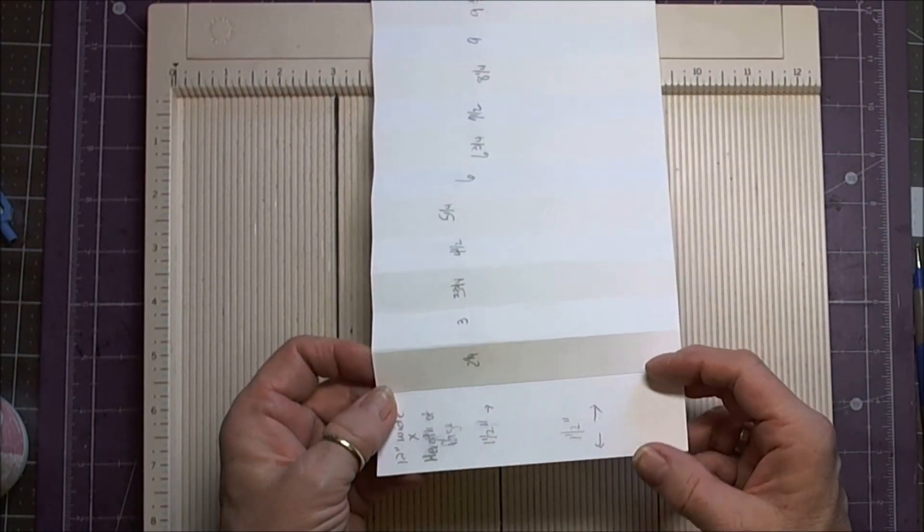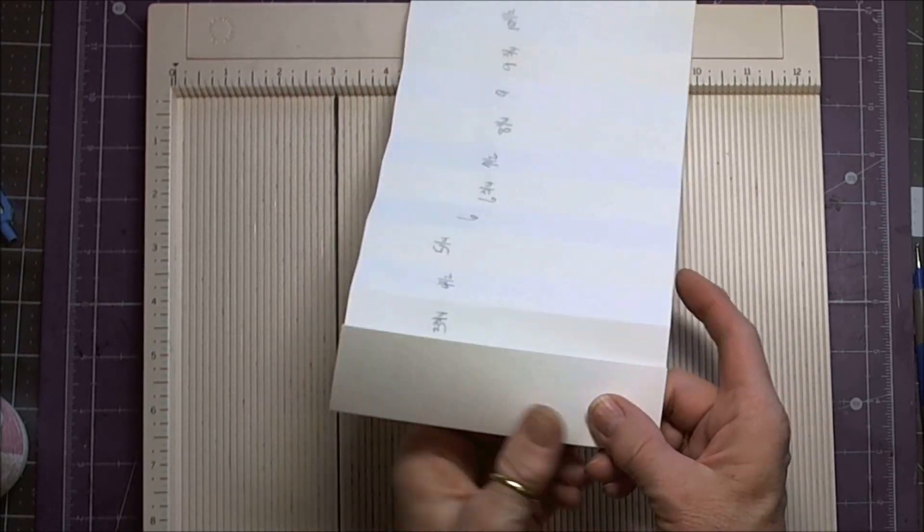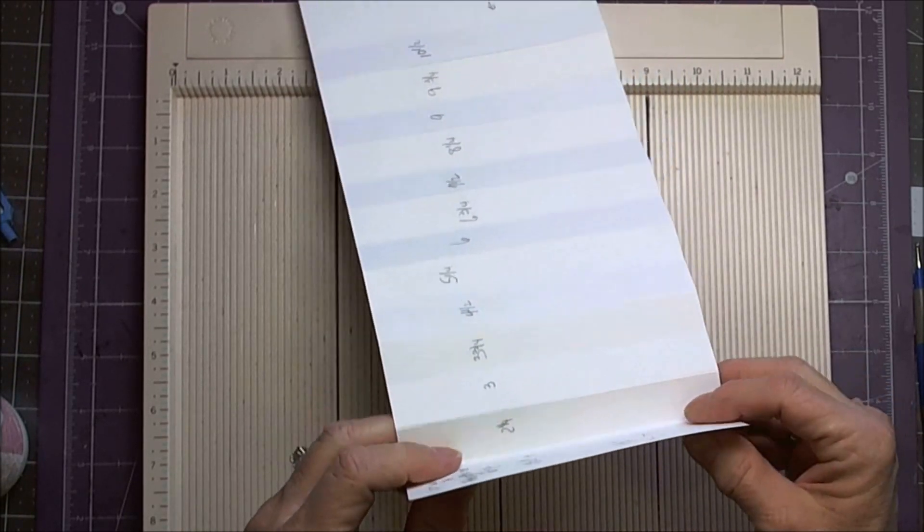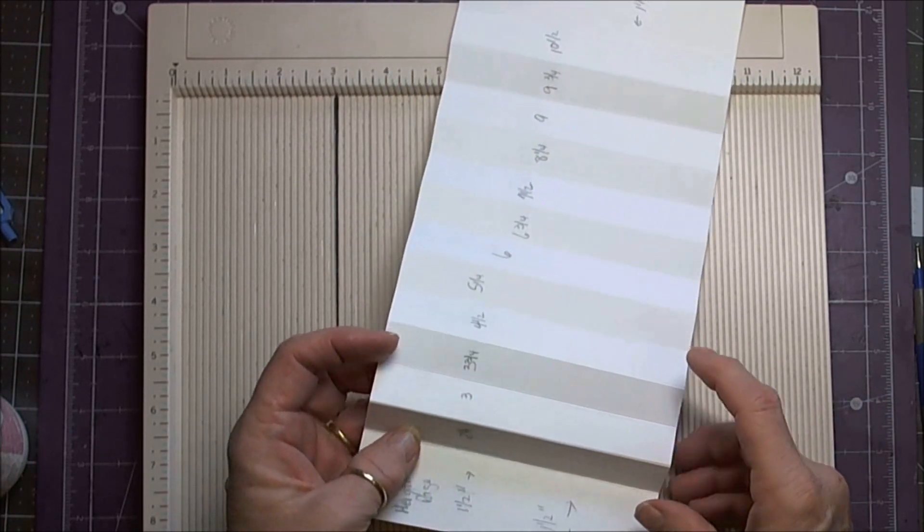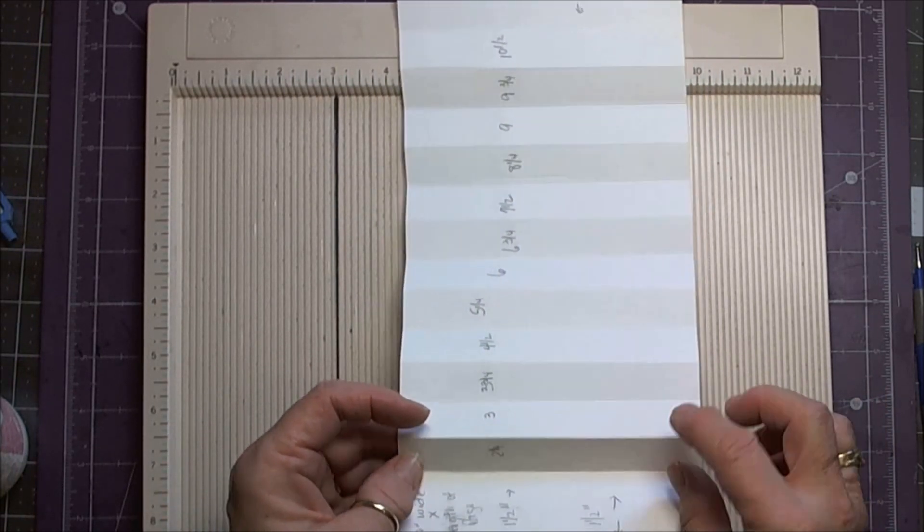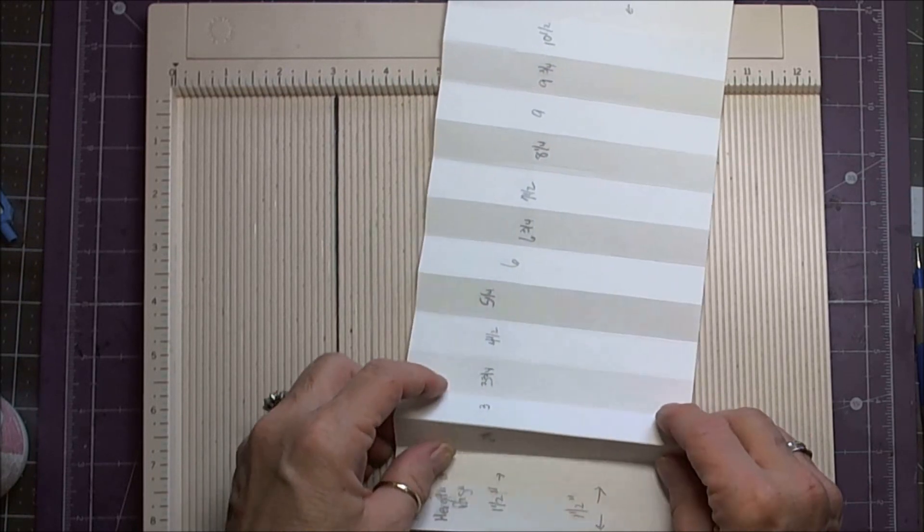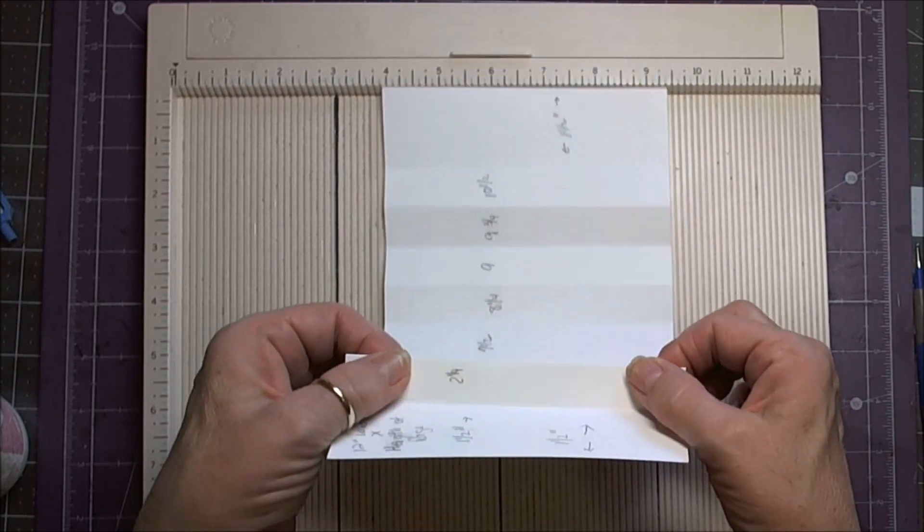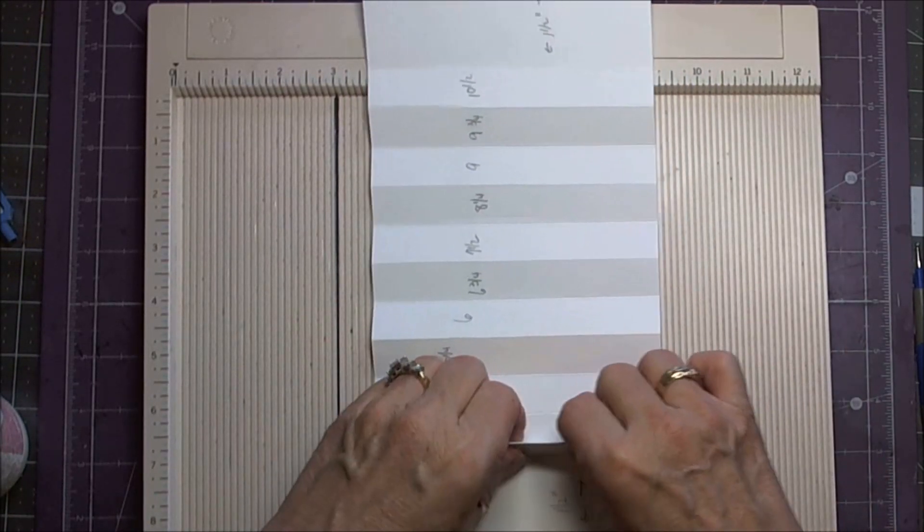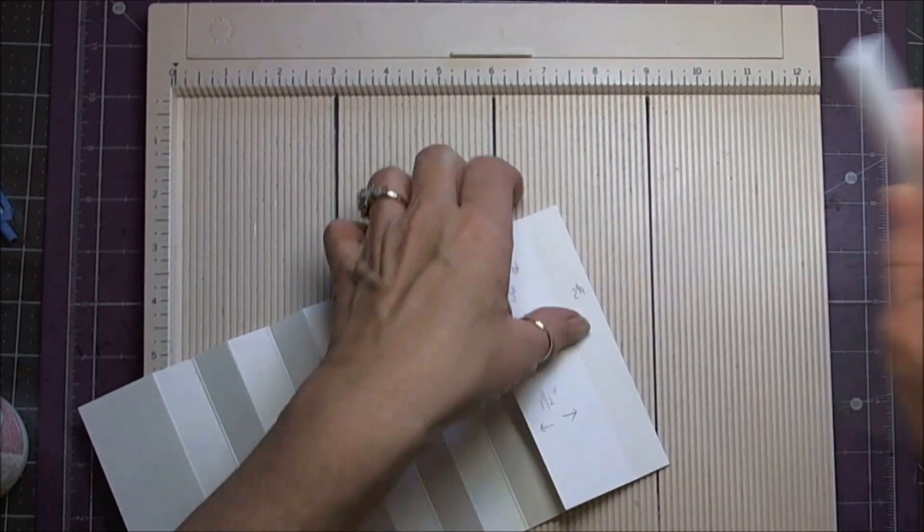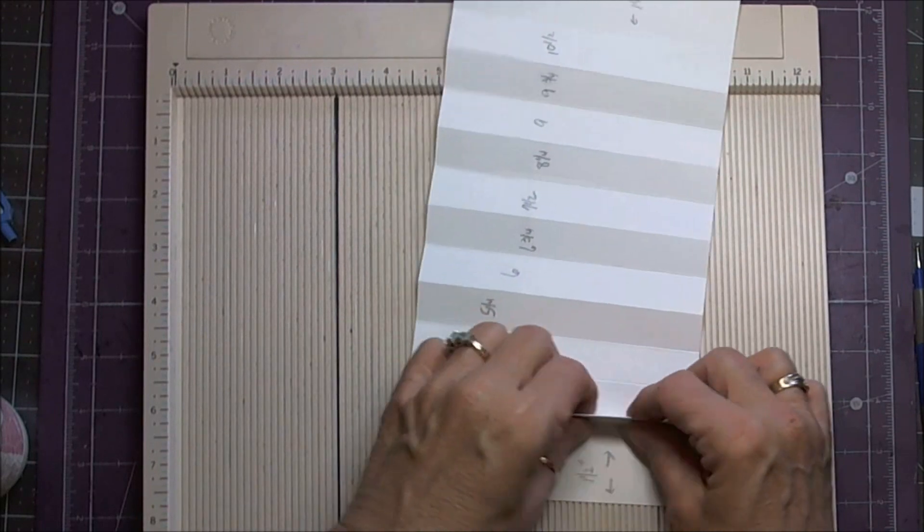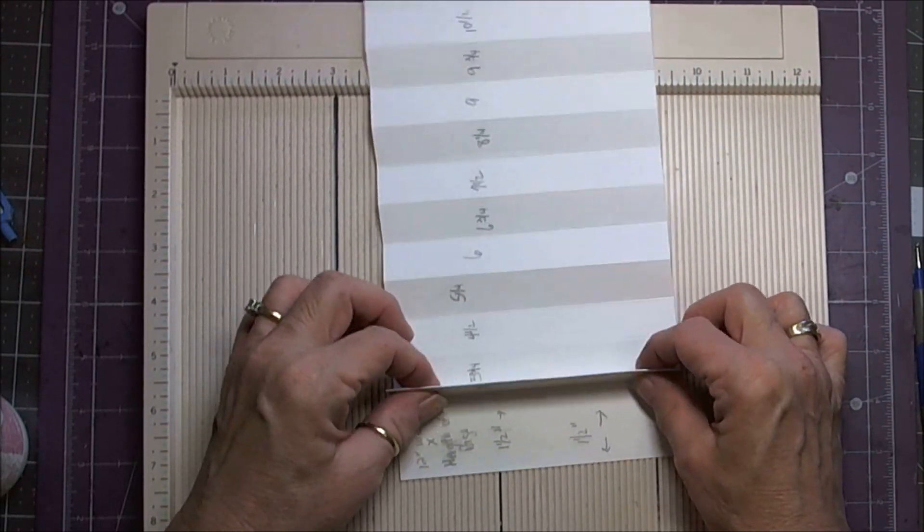The next thing you're going to do is you're going to start folding. Your first fold, bring the cardstock up towards you and fold it. The next one, you're going to take the next score mark, pull it up towards you, create a mountain, and really crease that, because this is going to be your first hinge for your papers.